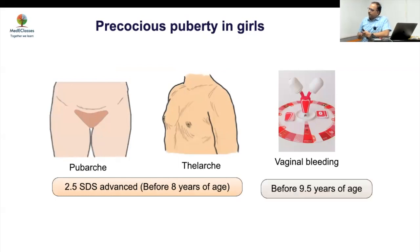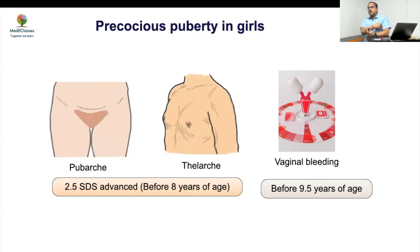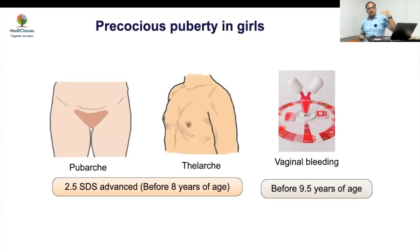For thelarche, the major differential is distinguishing true breast tissue from lipomastia. The same logic used for gynecomastia applies: if the resistance felt between thumb and finger when brought closer is more than what is felt at the axilla, it is true breast development; otherwise it is lipomastia. For pubarche, the key differential is whether the child is truly in Tanner P2.